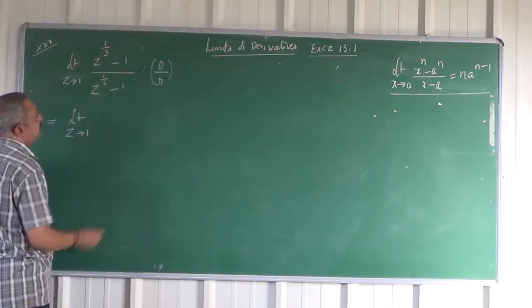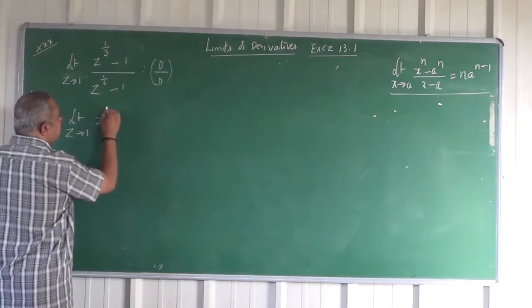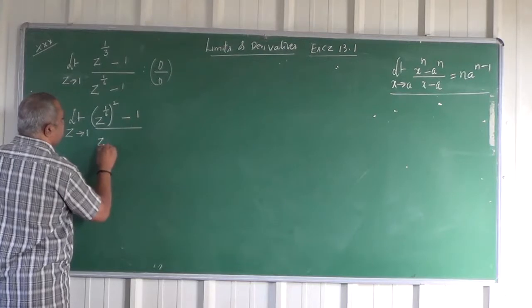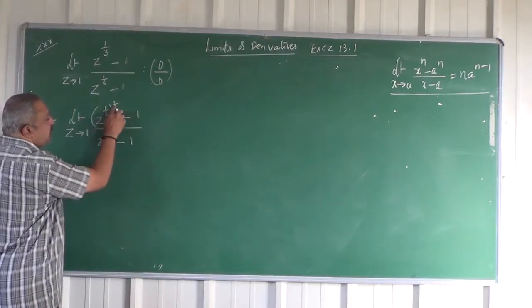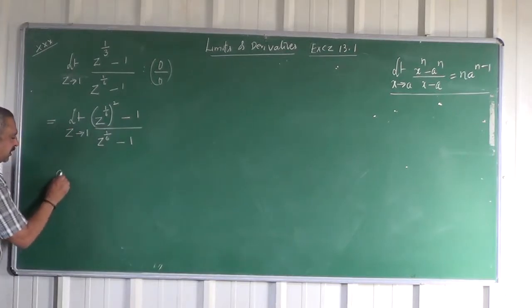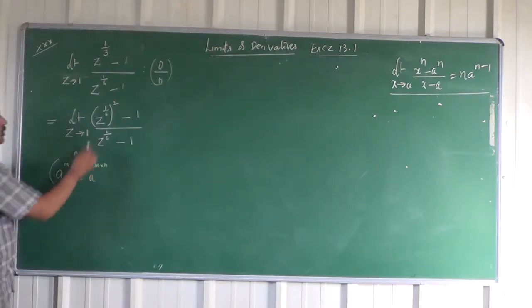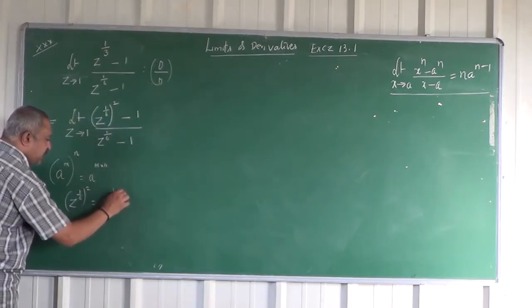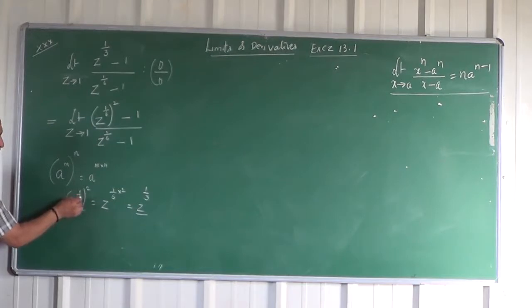I can write Z to the power of 1 by 3 as Z to the power of 1 by 6 whole square minus 1 divided by Z to the power of 1 by 6 minus 1. Is there anything wrong in writing like this? No. Because Z to the power of 1 by 6 whole to the power of 2 is 2 by 6, which is nothing but 1 by 3. You know that if you have an index like A to the power of M, now raise it to the power of N, how do you write it? M into N. So it is Z to the power of 1 by 6 raised to the index 2, so this is Z to the power of 1 by 6 into 2, that is simply Z to the power of 1 by 3. So Z to the power of 1 by 3 can be written as Z to the power of 1 by 6 whole square.